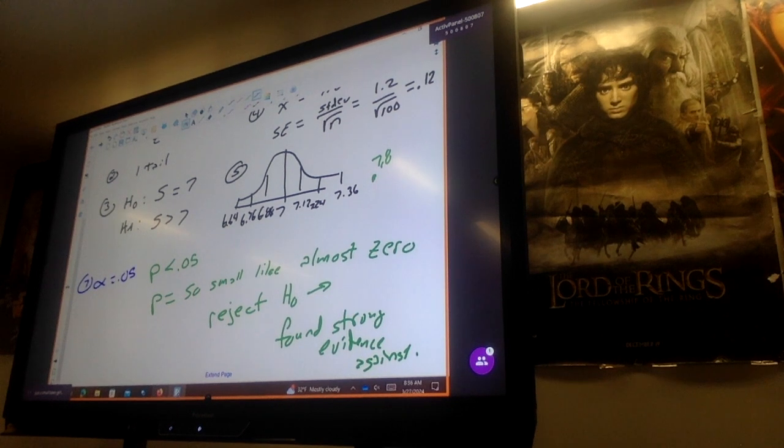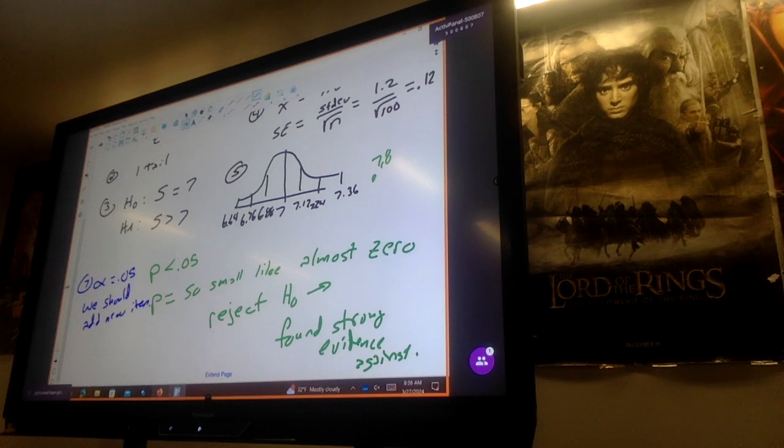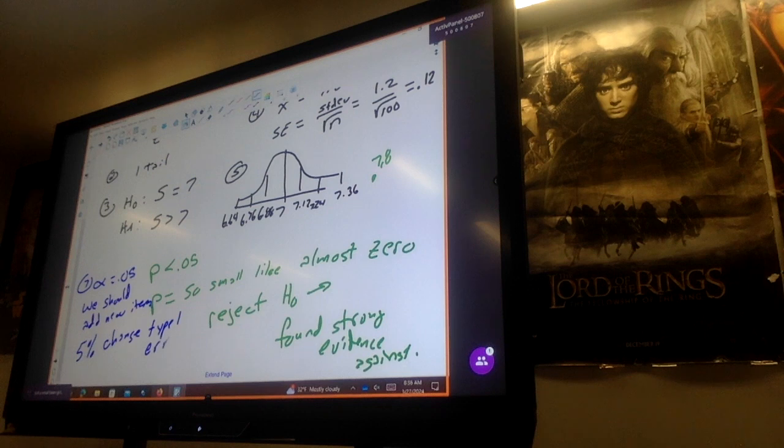So our conclusion basically means that we should add the new item, and being that we have an alpha of 0.05 means we have a 5% chance of a type one error. Okay, 5% chance of type one error. Type one error means that we rejected our null but it was actually true.